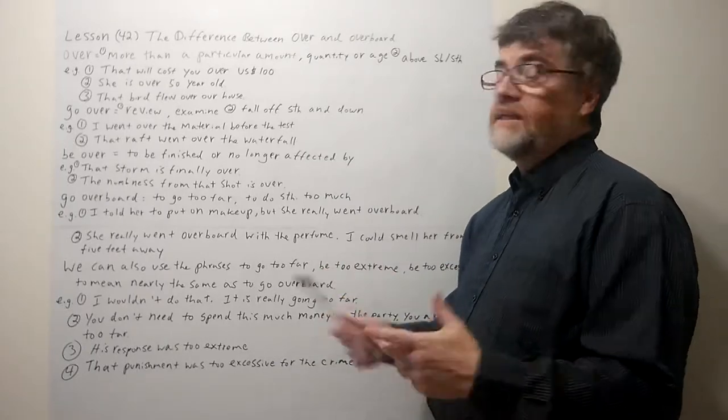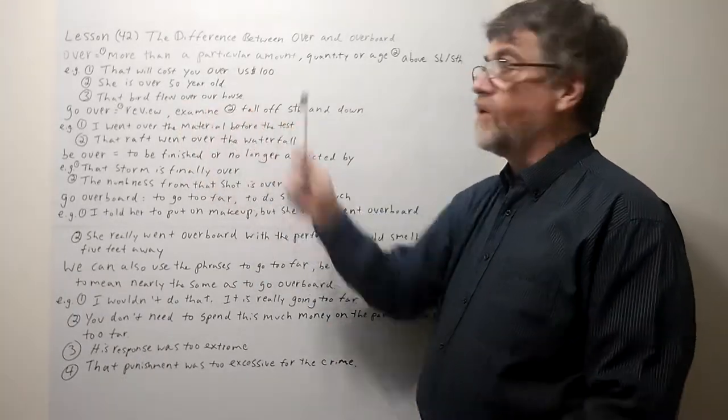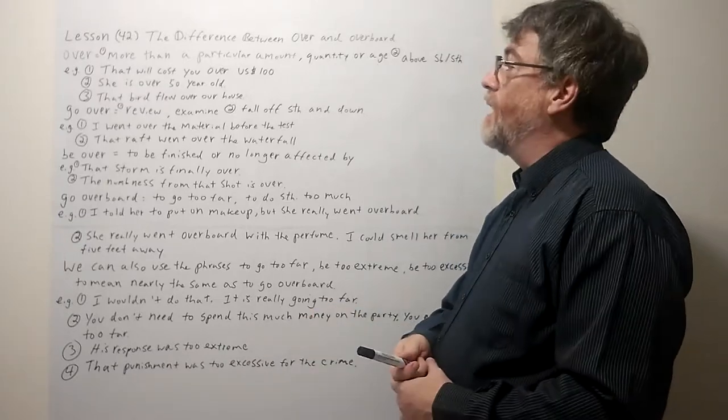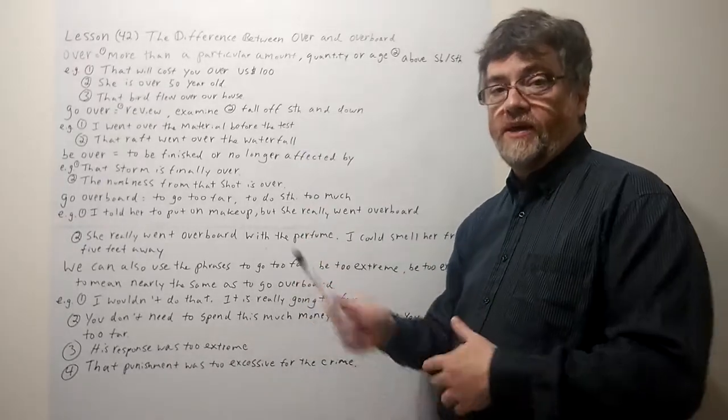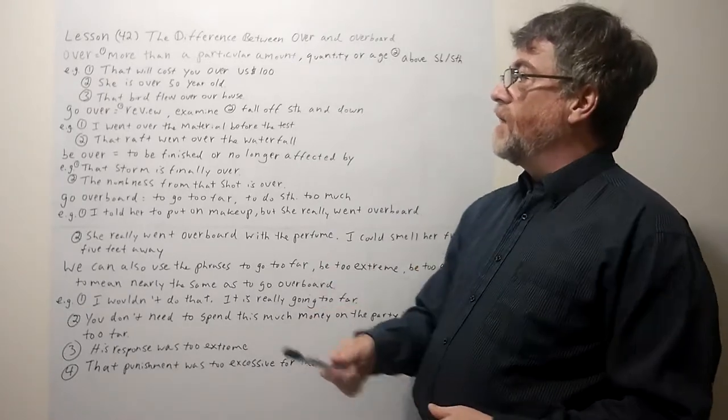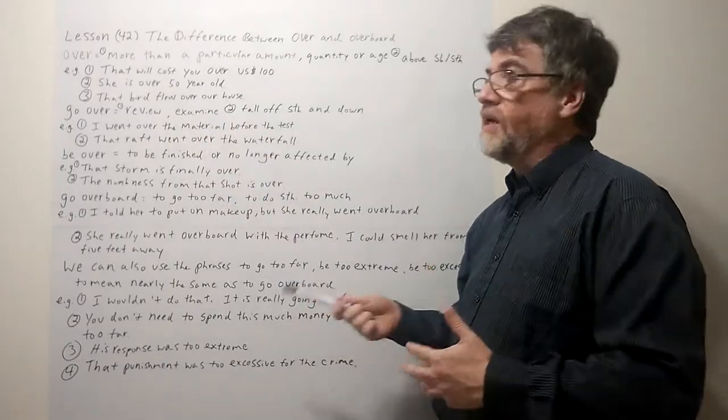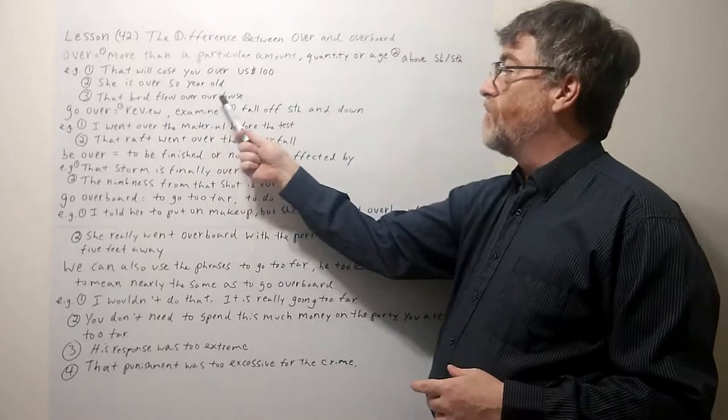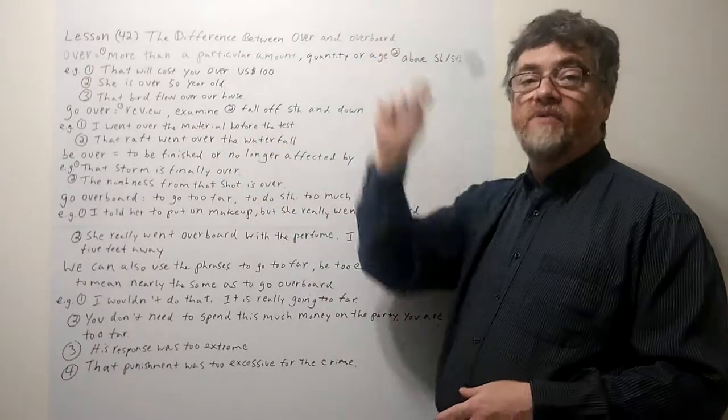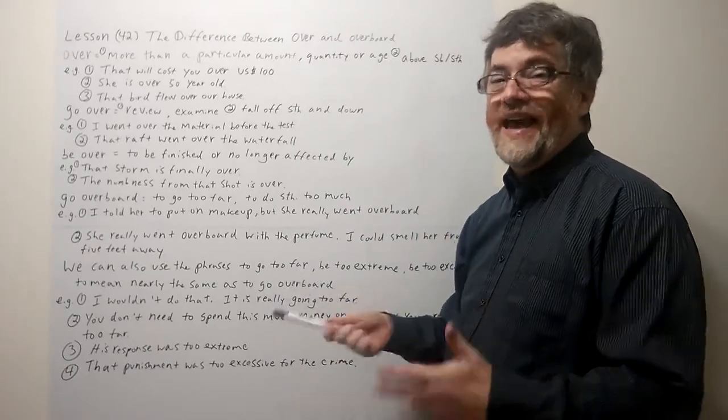Let's look at these examples. Number one, you can say that will cost you over $100. Maybe that's a reasonable price. But you're just saying that it's more than. You're not necessarily saying that it's overboard, that it's too far. She is over 50 years old, again meaning more than 50 years old. That bird flew over our house. Here the over simply goes back to this one. It just means above something.